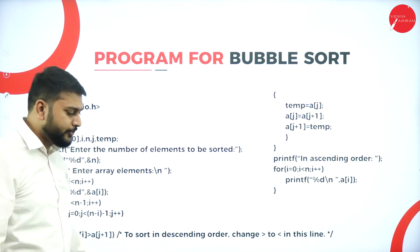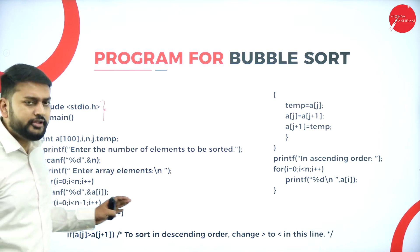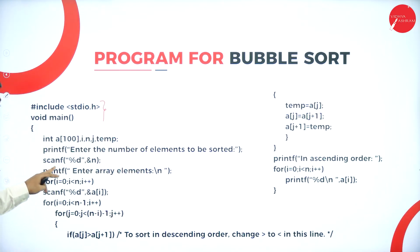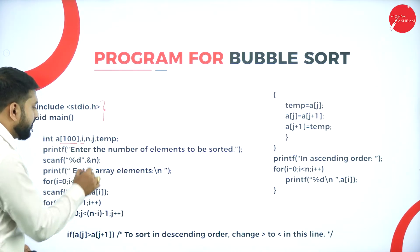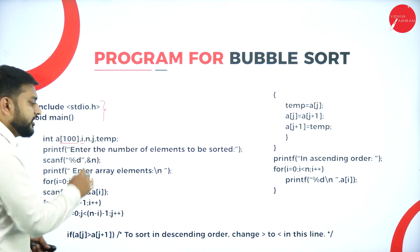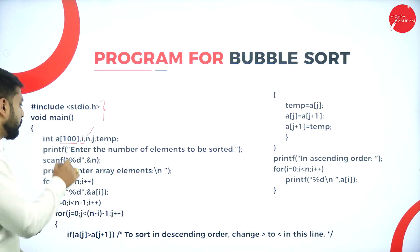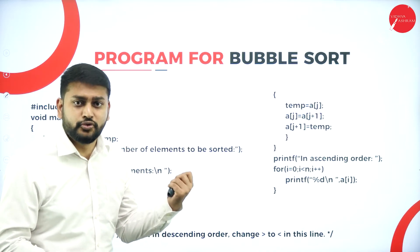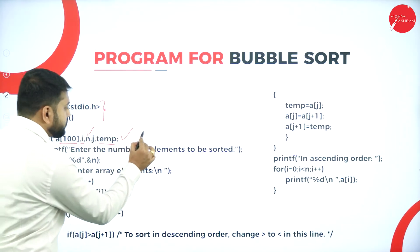Let me show you the bubble sort program in C. You can convert it to C++ by replacing printf and scanf with cin and cout. I've declared an array to store elements and variables: i, n, j (for loops), n (number of elements in the array), and temp (for swapping). Totally five variables are declared.